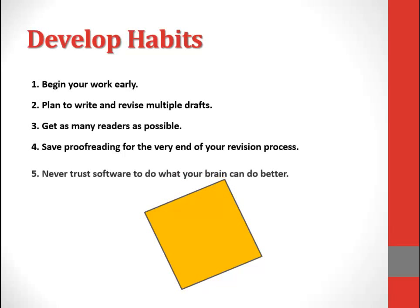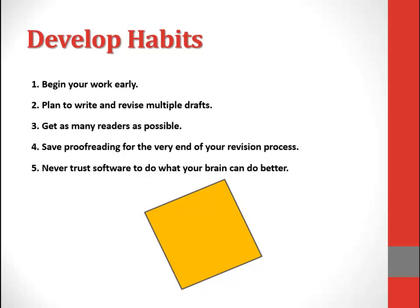An essential habit to develop is to never rely on software to do what your brain can do better. Computer software is limited in its ability to ensure accuracy of grammar, spelling, as well as references in text and in a list. Always rely on your skills in these areas and any manuals for final decisions about sentence structure, spelling, word choice, and referencing, such as the APA manual for APA style and citation, or Diana Hacker's Writer's Reference, which are both excellent resources for academic writing.